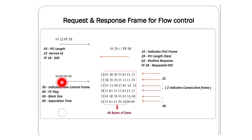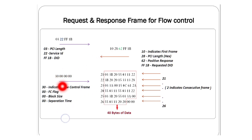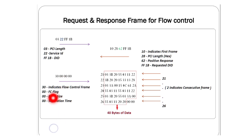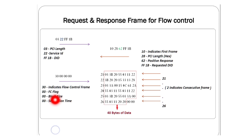The third step: as soon as we receive 10 and the PCI length, we must send the flow control frame. 30 indicates the flow control frame — '3' is the frame type code. Then 00 is the flow control flag, the next 00 is the block size, and the last 00 is the separation time.